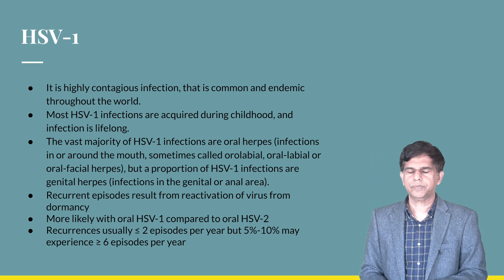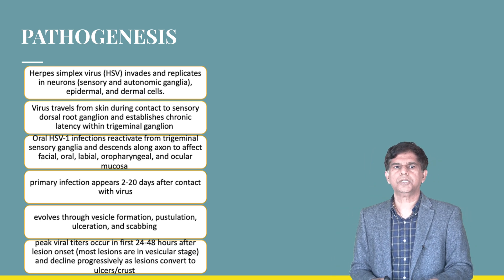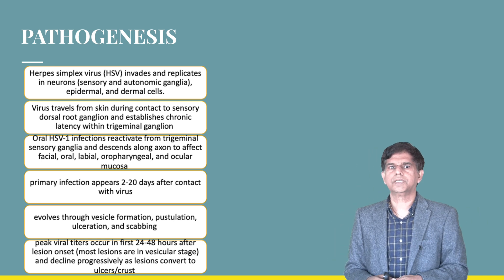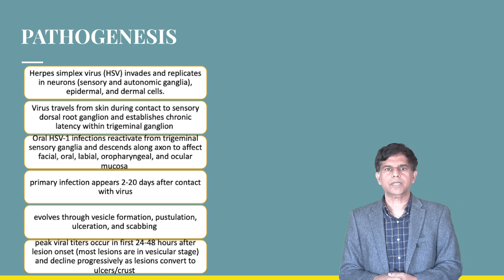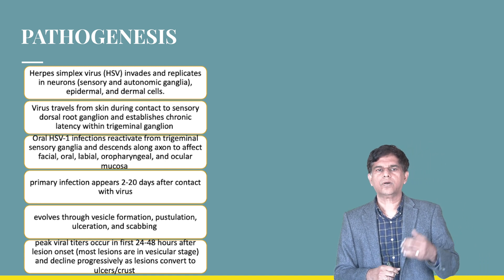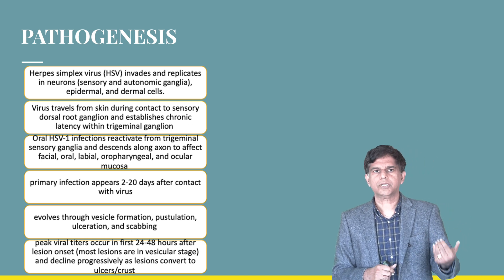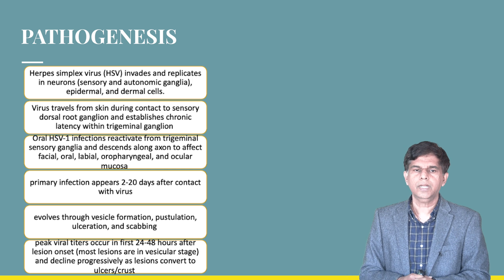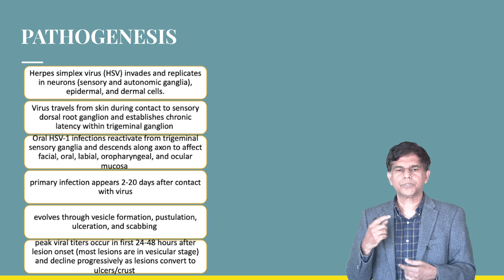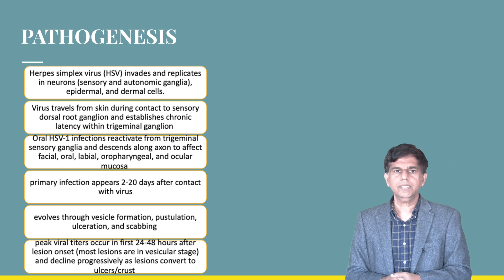Regarding pathophysiology, Herpes Simplex Virus invades and replicates in neurons of the sensory and autonomic ganglia as well as epidermal and dermal cells. The virus travels from the skin during contact to the sensory dorsal root ganglion, establishing chronic latency in the trigeminal ganglion. Oral HSV infection reactivates from the trigeminal sensory ganglia and descends along axons to affect facial, oral, labial, oropharyngeal, and ocular mucosa. Primary infection appears two to twenty days after exposure and evolves through vesicle formation, pustulation, ulceration, and finally scabbing. Peak viral titer occurs 24 to 48 hours after the onset of the lesion.